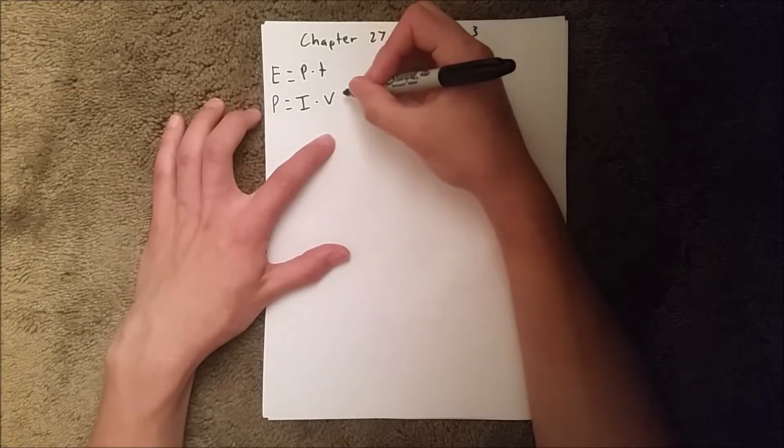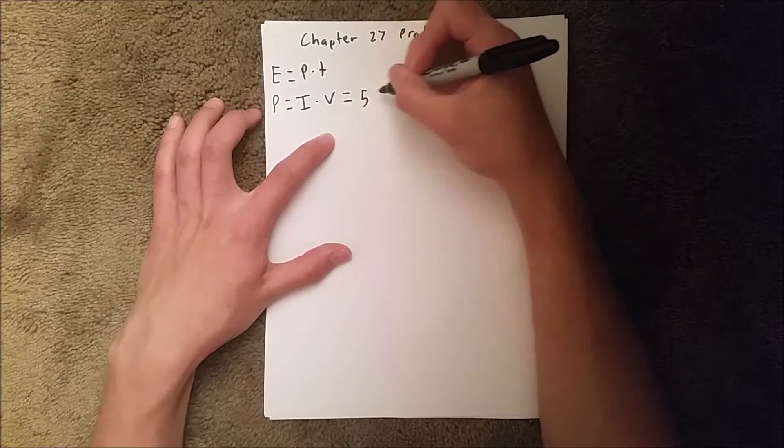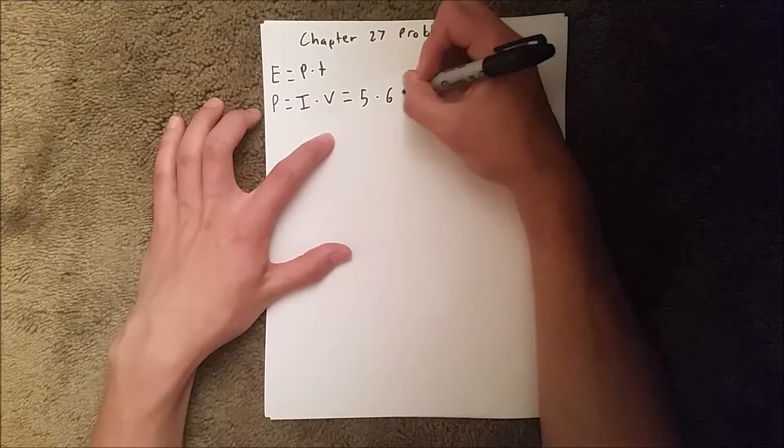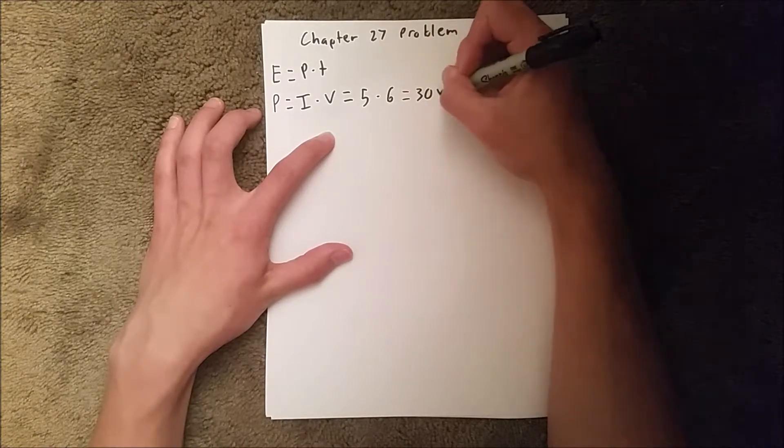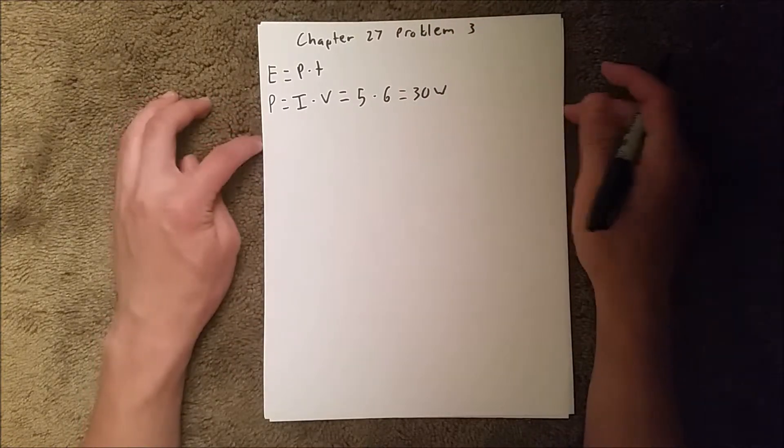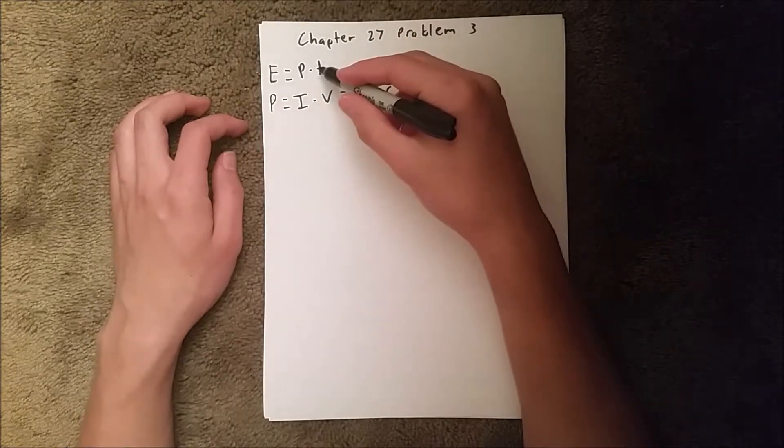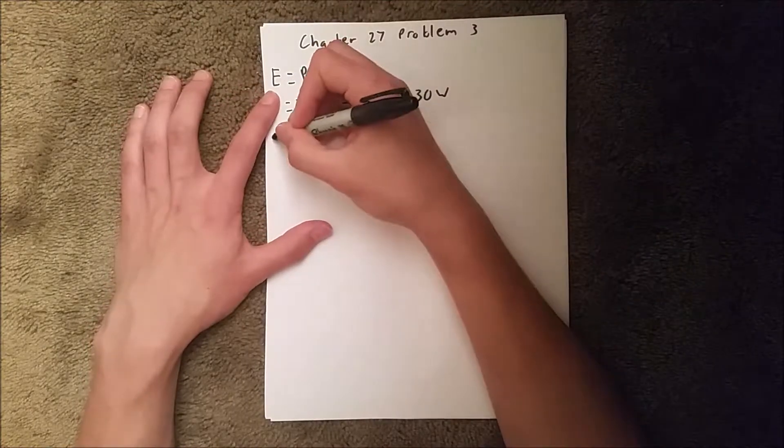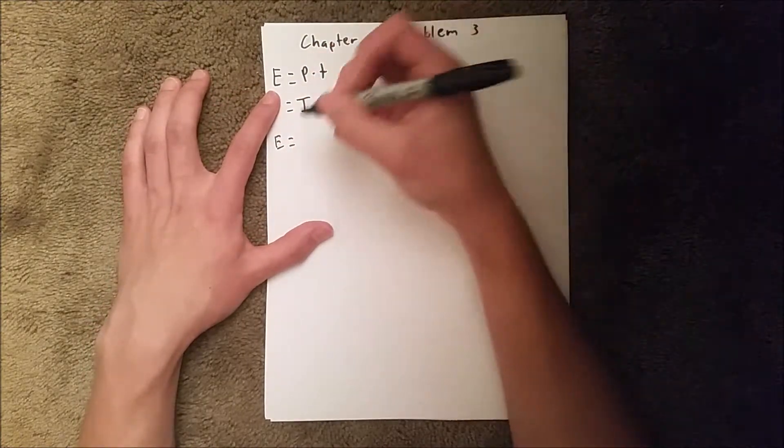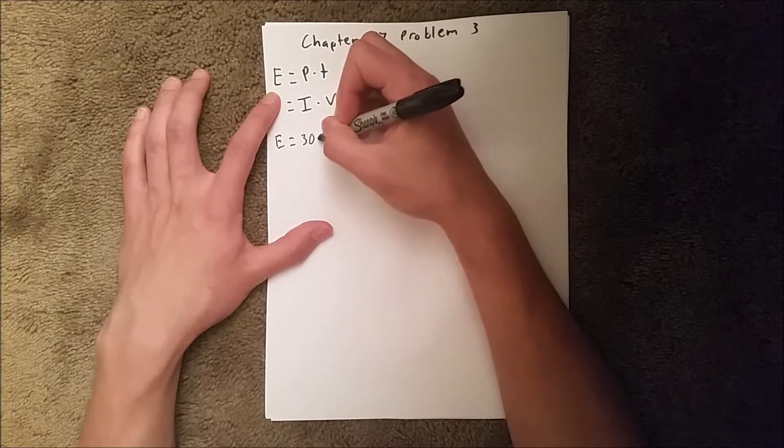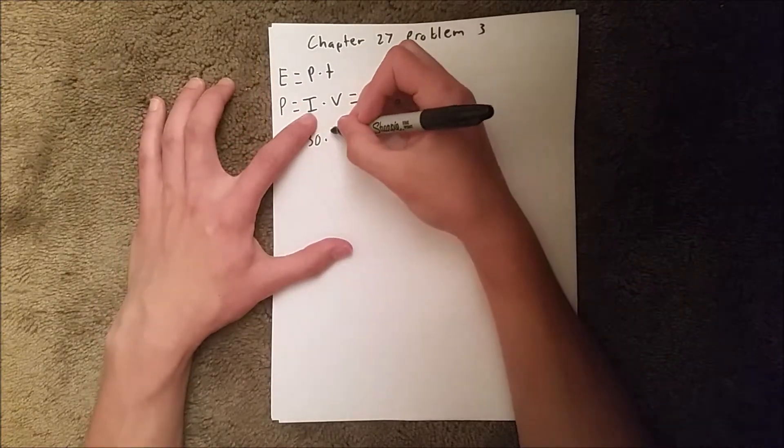We're given both of those quantities, so we can multiply them together and get 30 watts for power. Now we can solve this equation where E equals 30, our power, times our time.